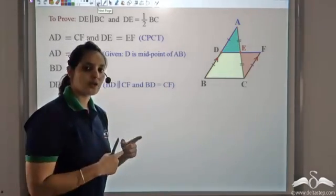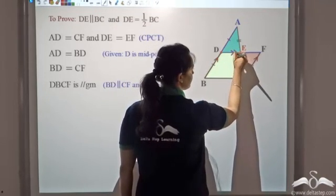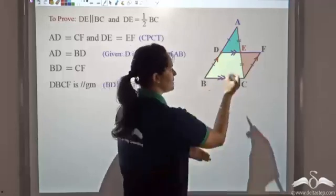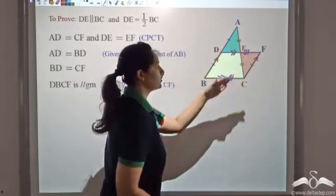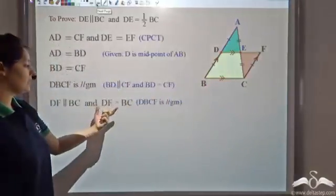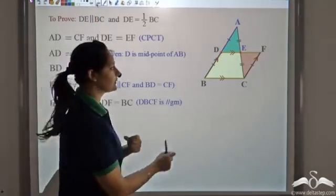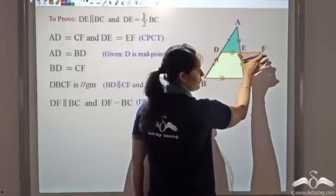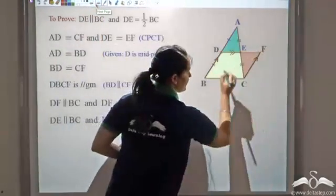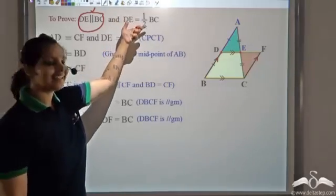Since DBCF is a parallelogram, the pair of opposite sides are parallel and equal. So DF is parallel to BC and DF equals BC. Now I wanted to prove that DE is parallel to BC — since DE produced is DF, DE is also parallel to BC. So DE is parallel to BC, and DF equals BC.